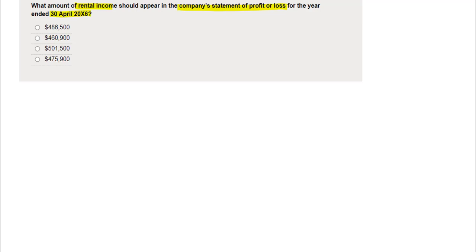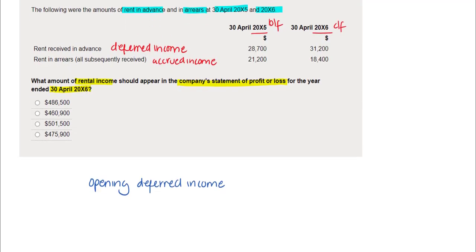Start with the opening deferred income. The question reveals that the opening deferred income balance is £28,700 — we're going to add that figure on. We're adding this figure on because it's an amount that would have been deferred last year; it would have been deducted from last year's rental income, but it is relevant for our current year. So we're adding on the deferred income.